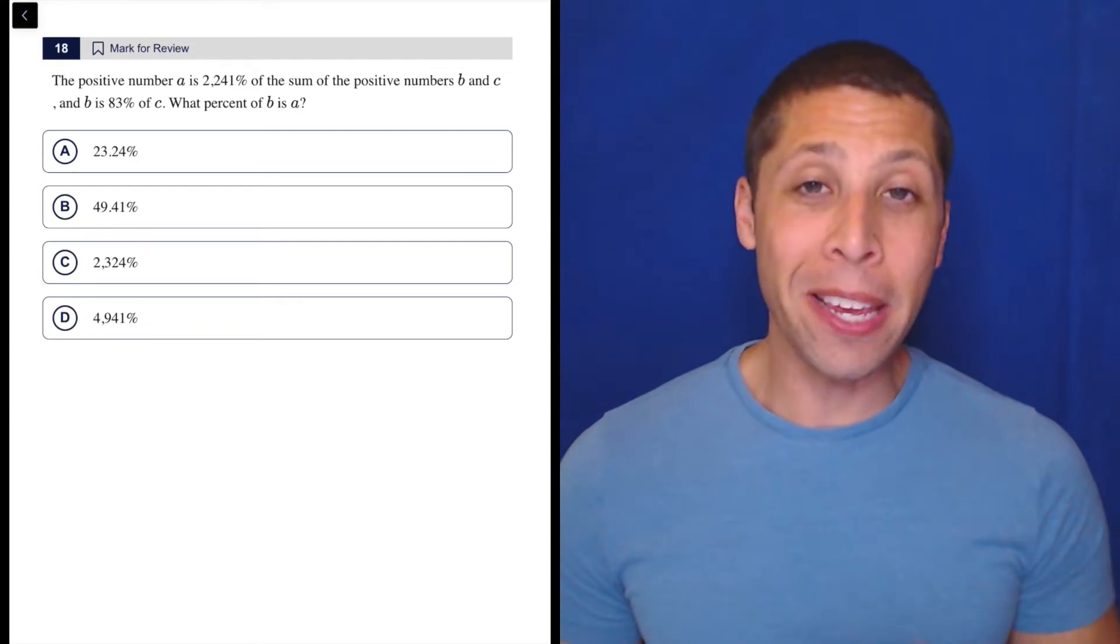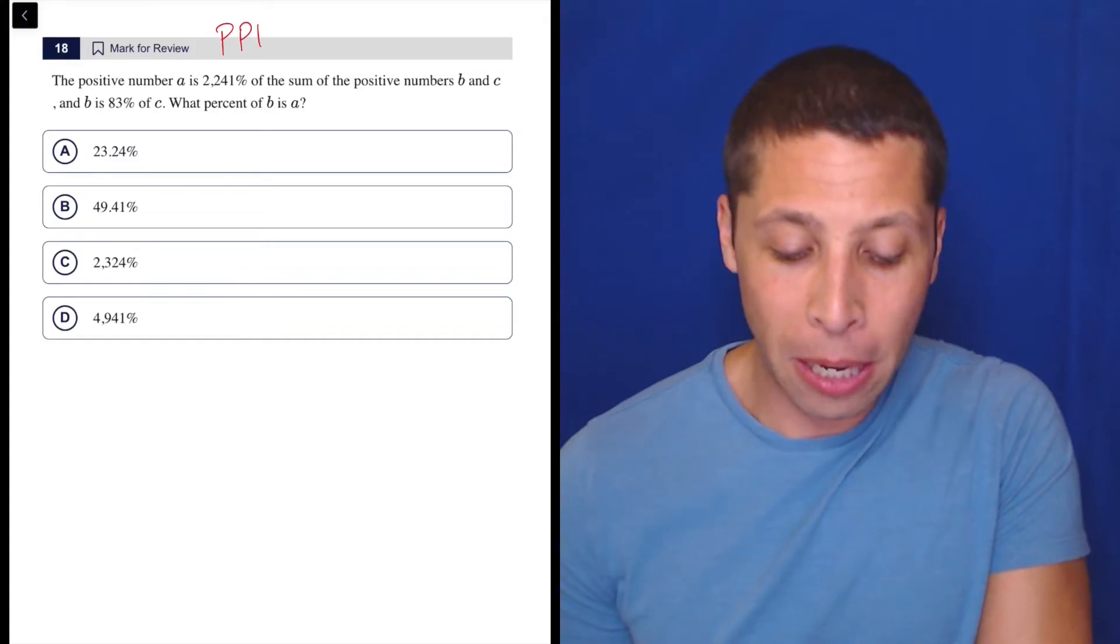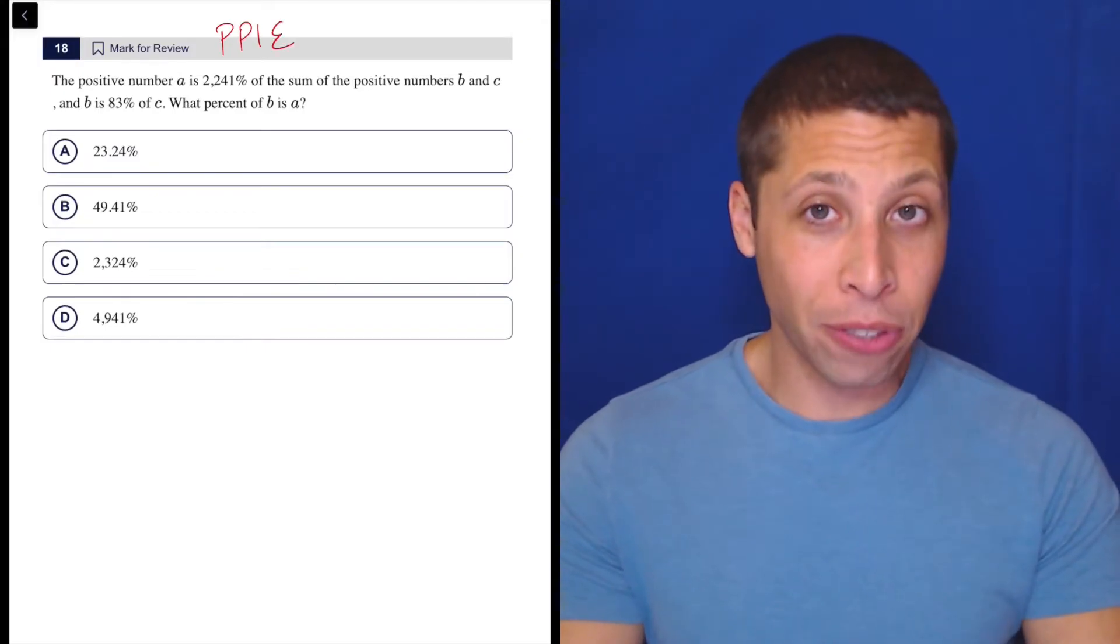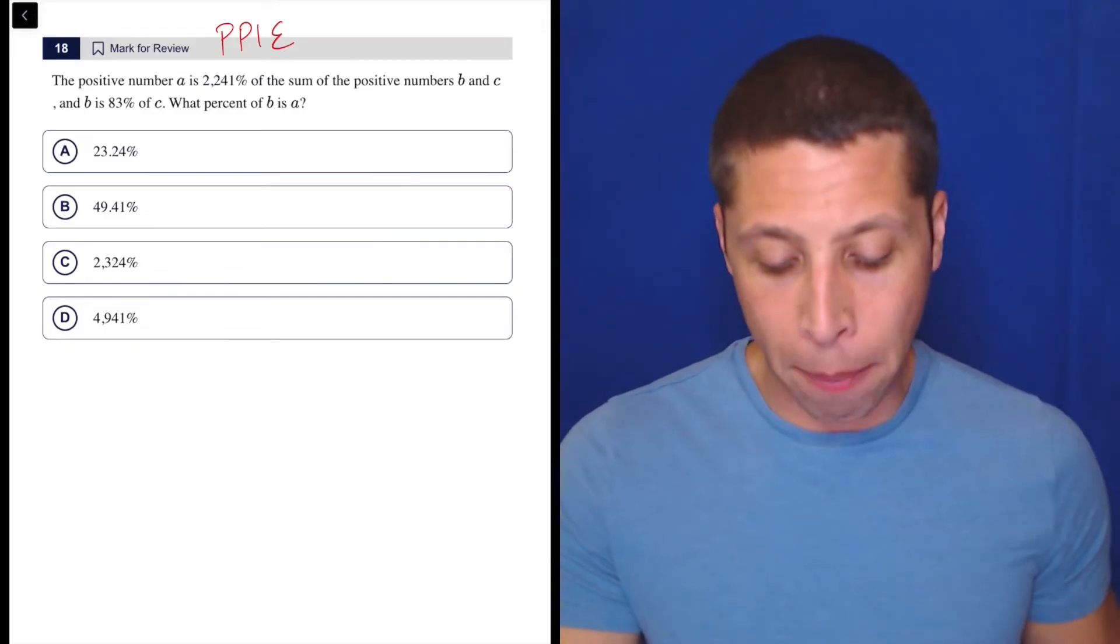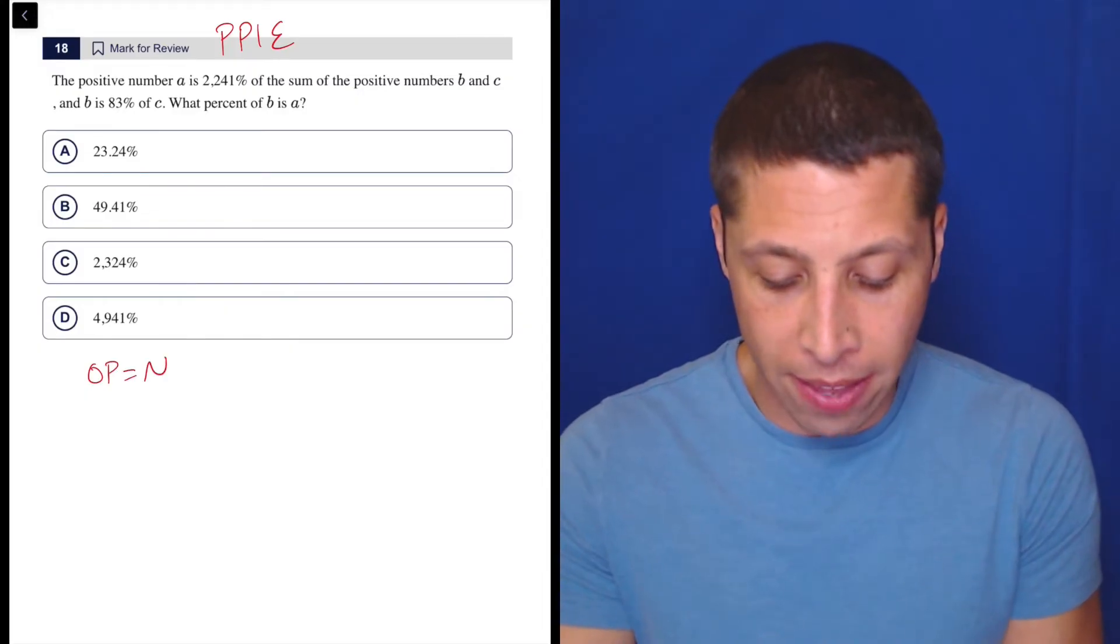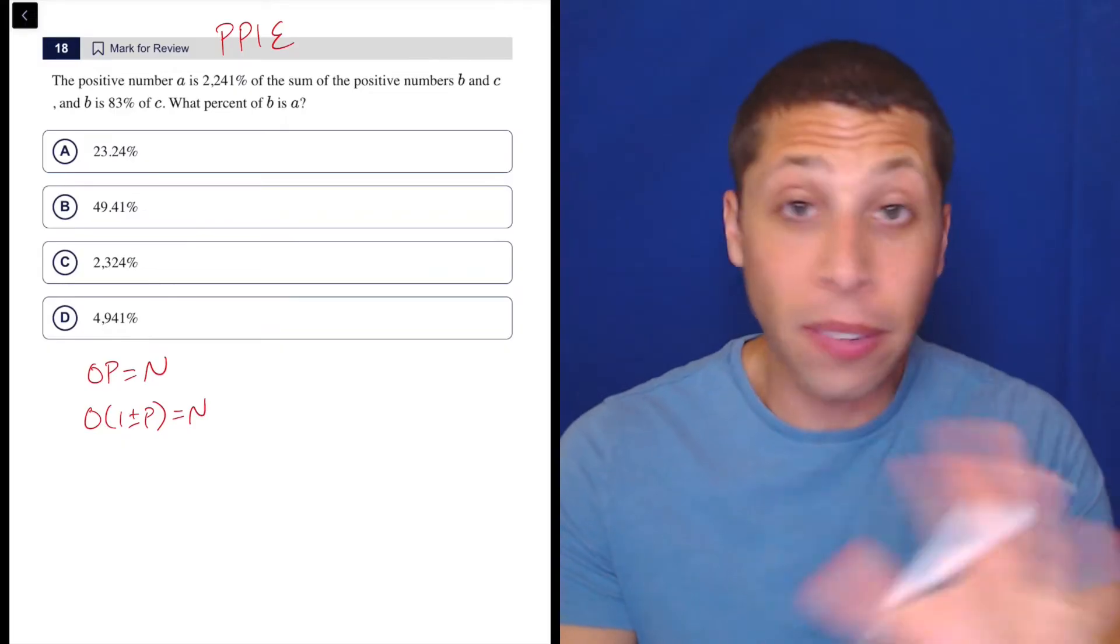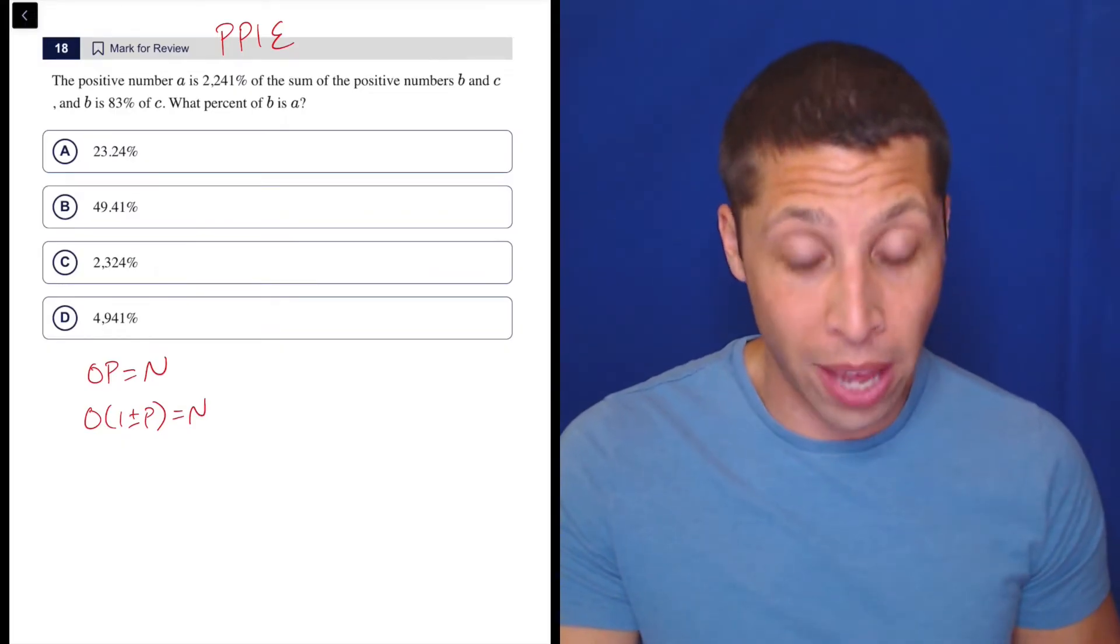This is a really easy question for me because I have only one thing on my mind as I'm going through the entire SAT: plug points into equations. So I see that I have some percentages here and that instantly makes me think about two formulas - the open formula for regular percentages and then the open formula when we have an increase or decrease in the percentages. So I haven't even read the problem yet. I just see there's percentages involved, so I know I'm probably going to use one of those two things.